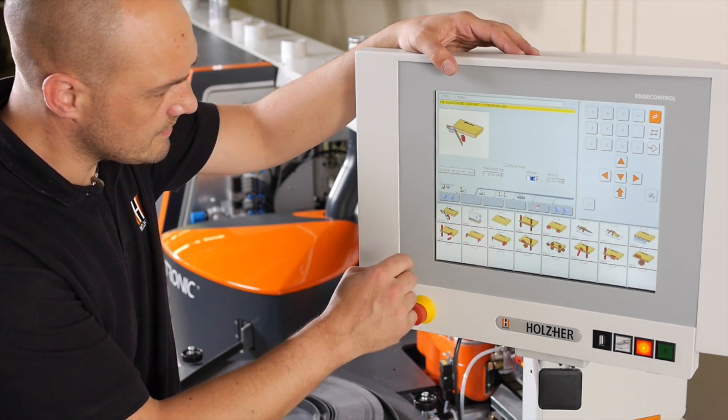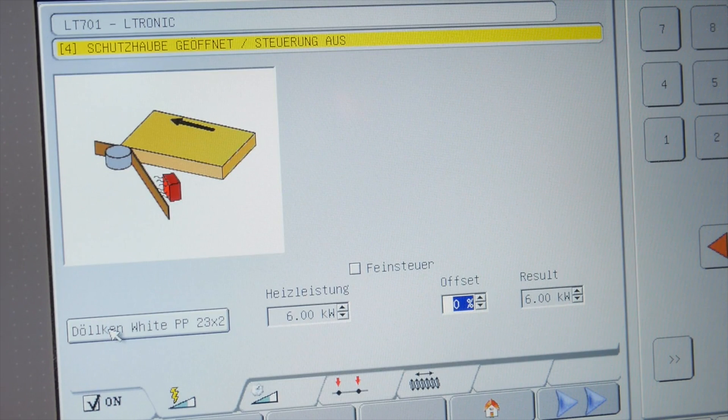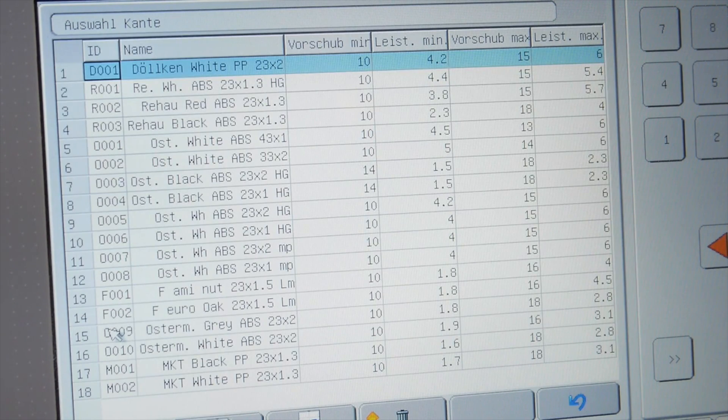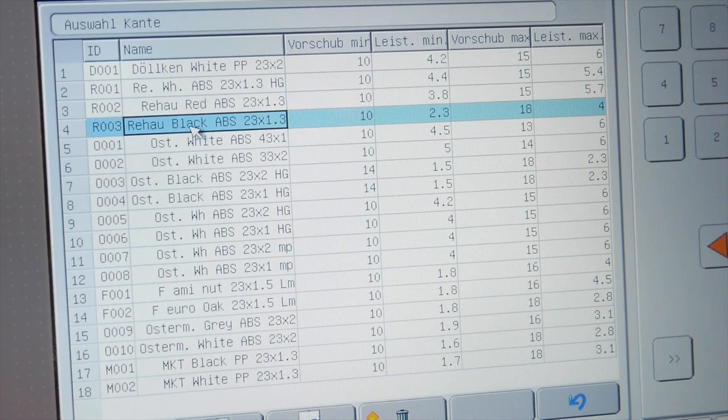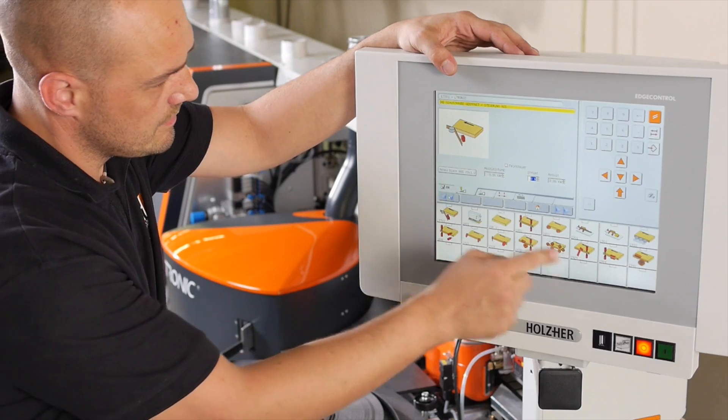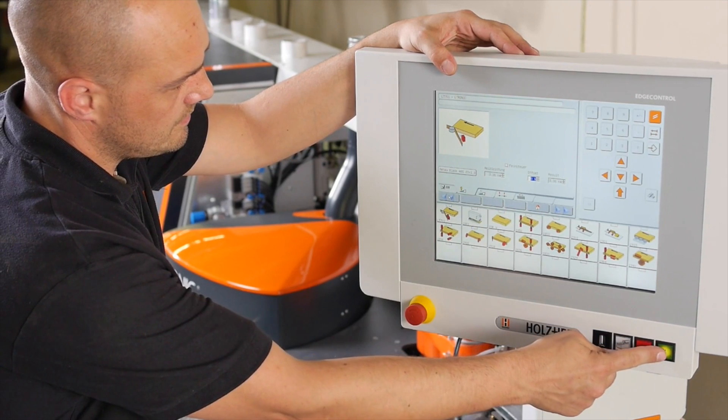An edging database allows the specific laser edging to be selected with its matching energy requirement, so that the machine is ready for operation immediately at the touch of a button, without any heat up time.